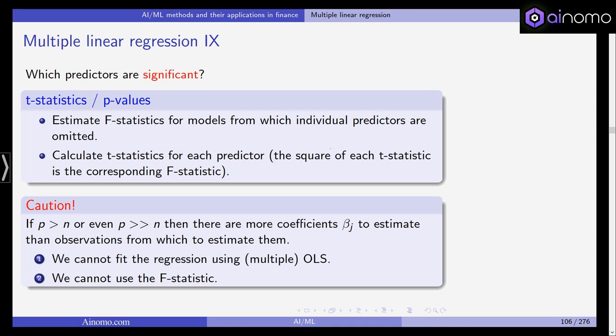We have checked whether at least one predictor is significant. We can use T-statistics and p-values to check which predictors are significant. In the next video, we're going to decide on the question which predictors we should choose.